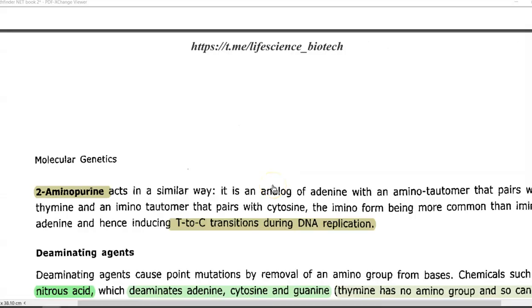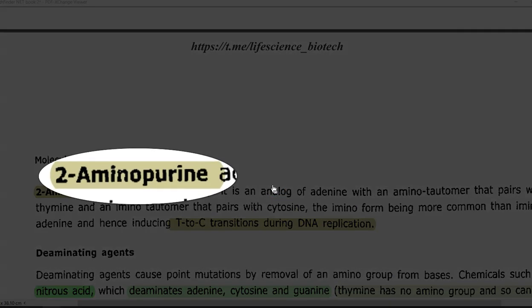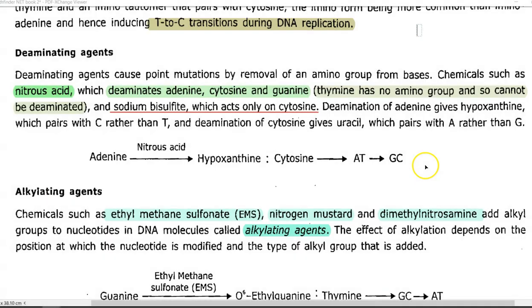One more example of a base analog is 2-aminopurine. The next group is deaminating agents. The name itself says that these are chemical agents that cause point mutations mainly by removing the amino group from the bases.